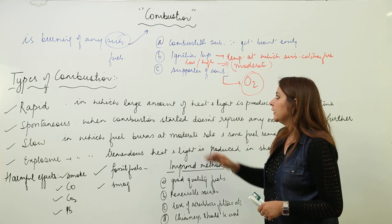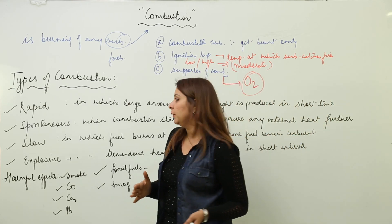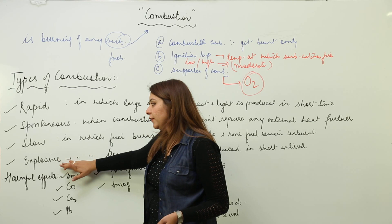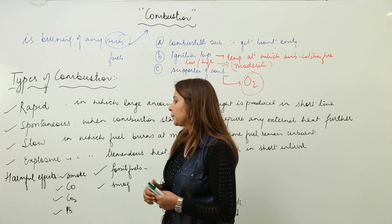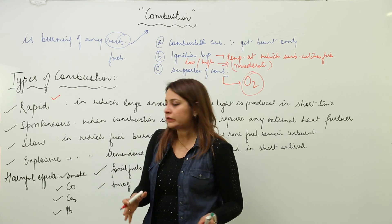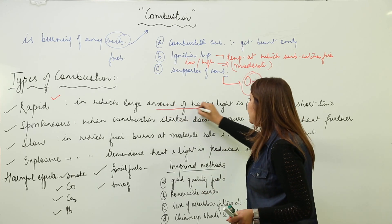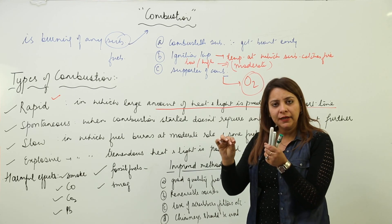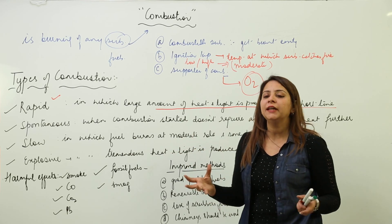There are different types of combustion depending on the rate at which it takes place: rapid combustion, spontaneous combustion, slow combustion, and explosive combustion. In rapid combustion, combustion occurs at a very fast rate such that a large amount of heat and light is produced in a short time. For example, burning a matchstick near a candle — it catches fire very soon.